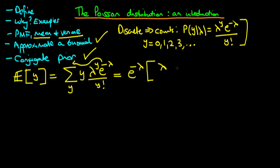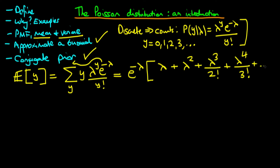When y equals 2, we get 2 times lambda squared divided by 2 factorial. Since 2 factorial is just 2, the 2's cancel and we're left with lambda squared. For lambda cubed, we get 3 times lambda cubed divided by 3 factorial — the 3's cancel leaving 2 factorial on the bottom. For lambda to the power 4 we get lambda to the power 4 divided by 3 factorial, and we could continue on forever.